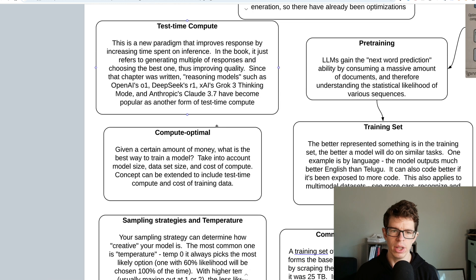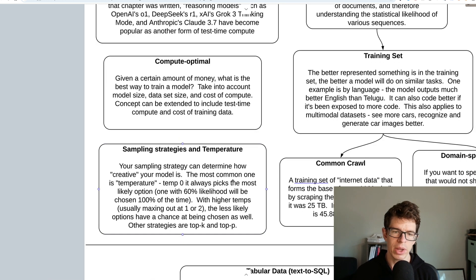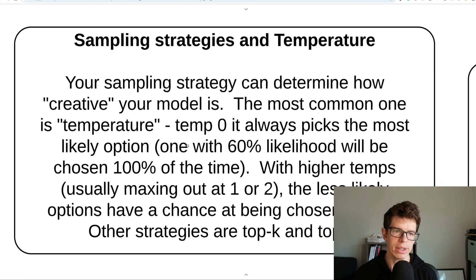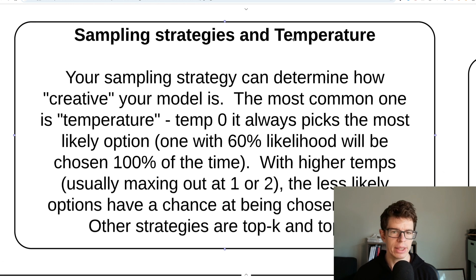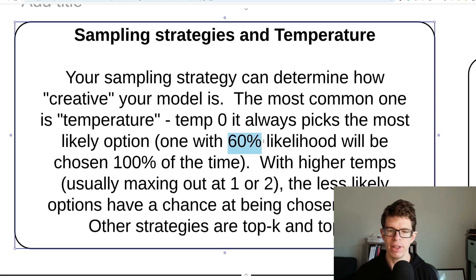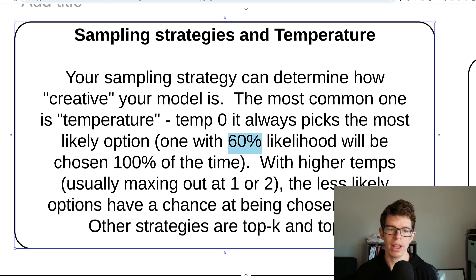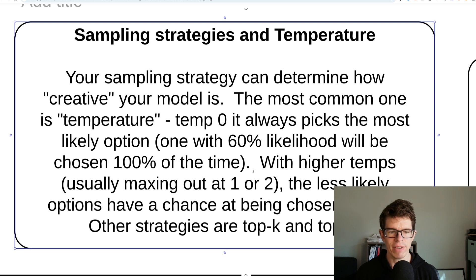When you're using the API, sometimes you'll be able to set the temperature. At temperature zero, it always picks the most likely option — if the model says 60% likelihood for a word, it chooses that 100% of the time. With higher temperatures, usually maxing out at one or sometimes two, the other words have a chance of being chosen as well, giving you more variety and creativity.